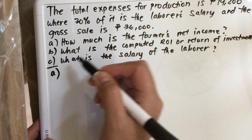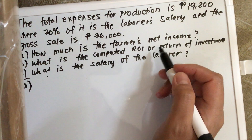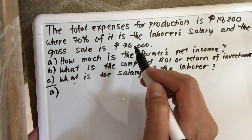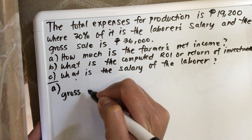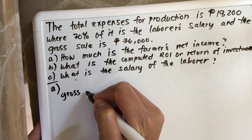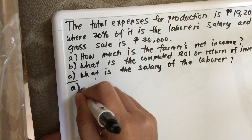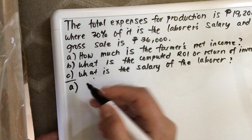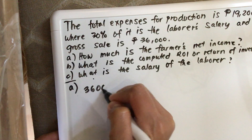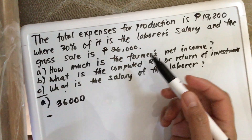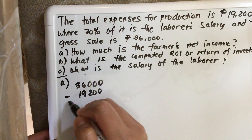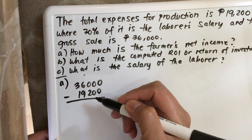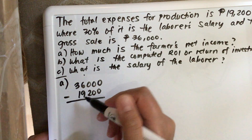So for A, how much is the farmer's net income? The gross sale is 36,000 pesos, minus the expenses which is 19,200, and the net income is 16,800 pesos.